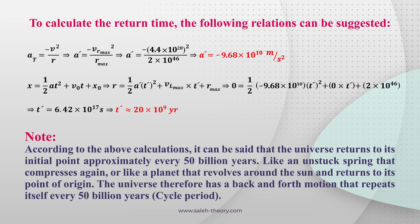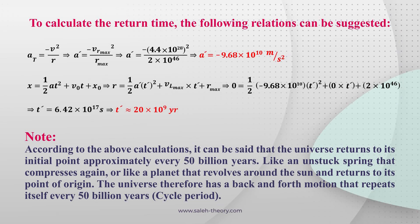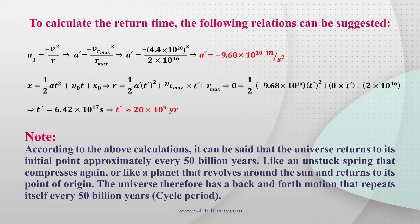According to the above calculations, the universe returns to its initial point approximately every 50 billion years, like an unstretched spring that compresses again, or like a planet that revolves around the sun and returns to its point of origin. The universe therefore has a back-force motion that repeats itself every 50 billion years cycle period.